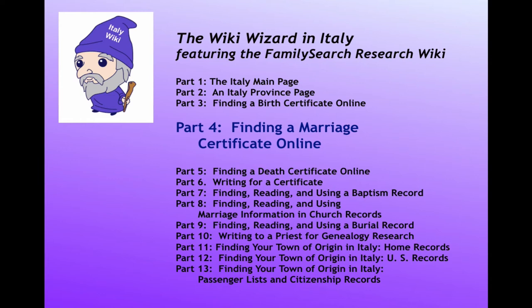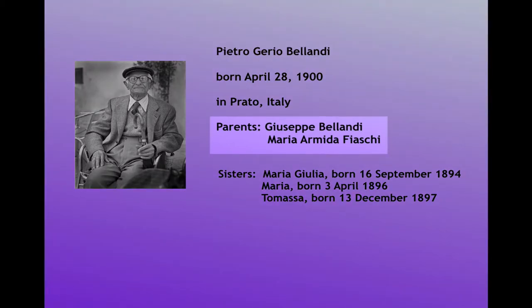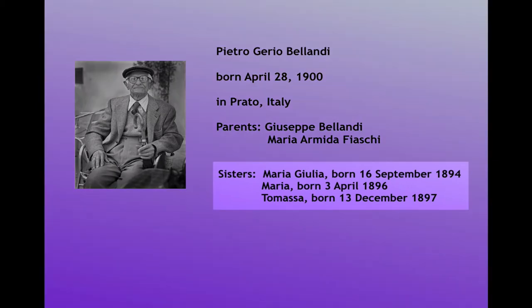This is Part 4 in a series of videos intended to help you use the FamilySearch Research Wiki to locate records about your ancestors in Italy. In Part 3, we began a case study into the family of Pietro Guerrio Bellondi. I showed you how to find his birth certificate, which gave us the full names of his parents, Giuseppe Bellondi and Maria Armida Fiosci. I also showed you how to use the index to locate other children in the family, and we found birth records for his three sisters.